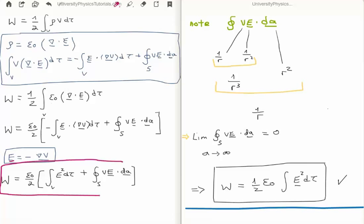So that the work done is a half epsilon zero outside of a volume integral and a closed surface integral. So let's look at the closed surface integral of the potential multiplied by the electric field dotted with the infinitesimal surface area element.